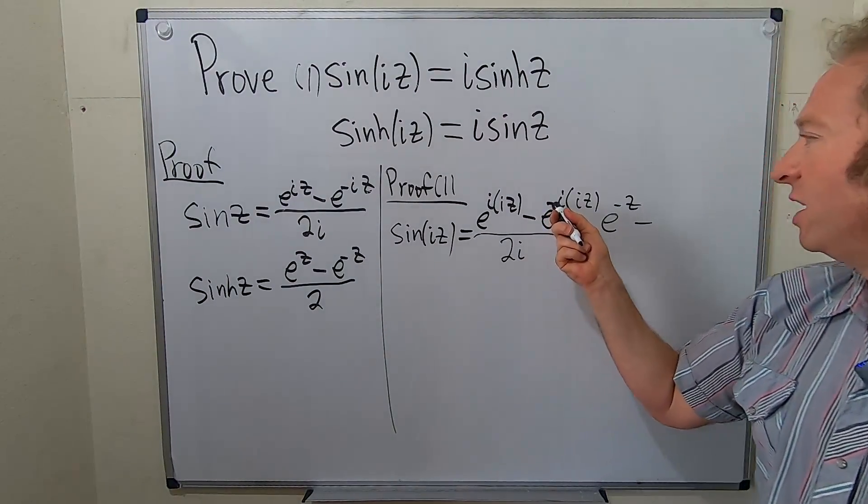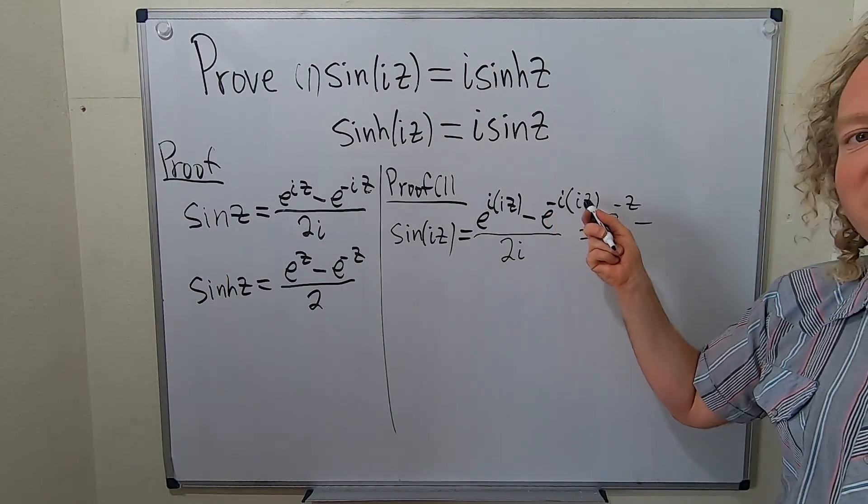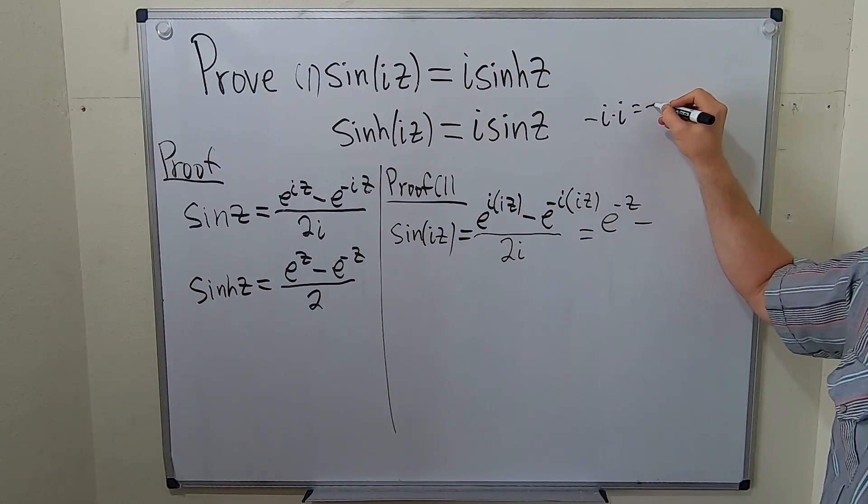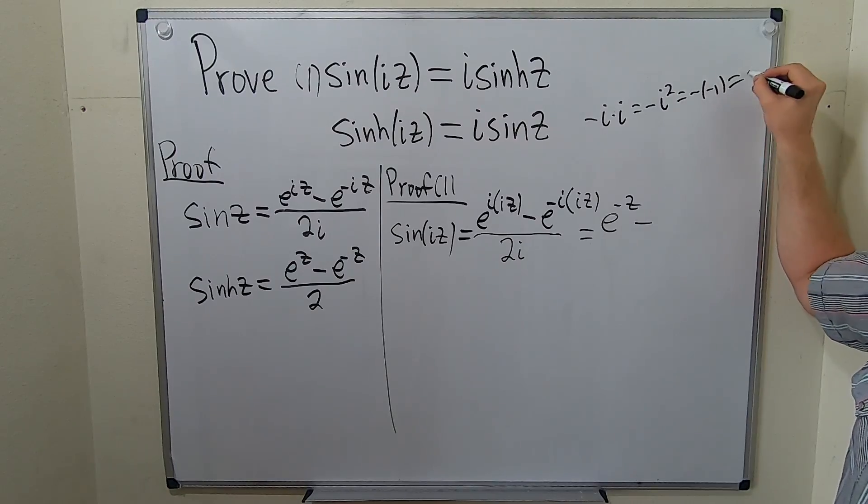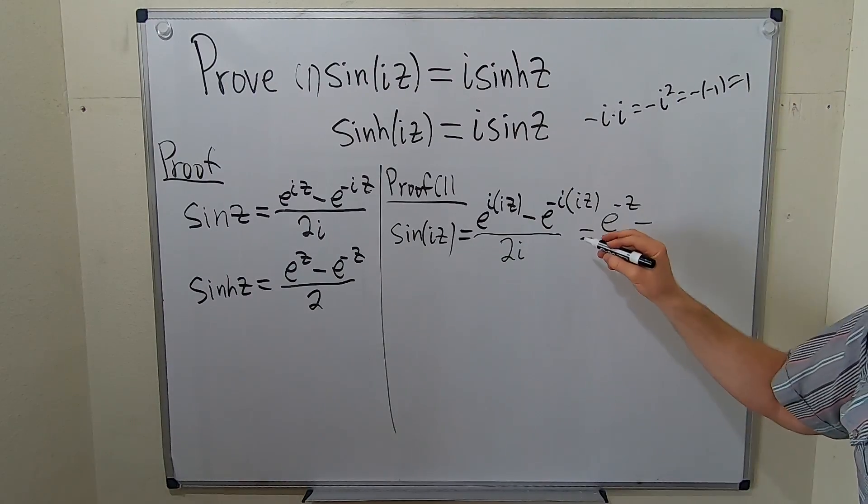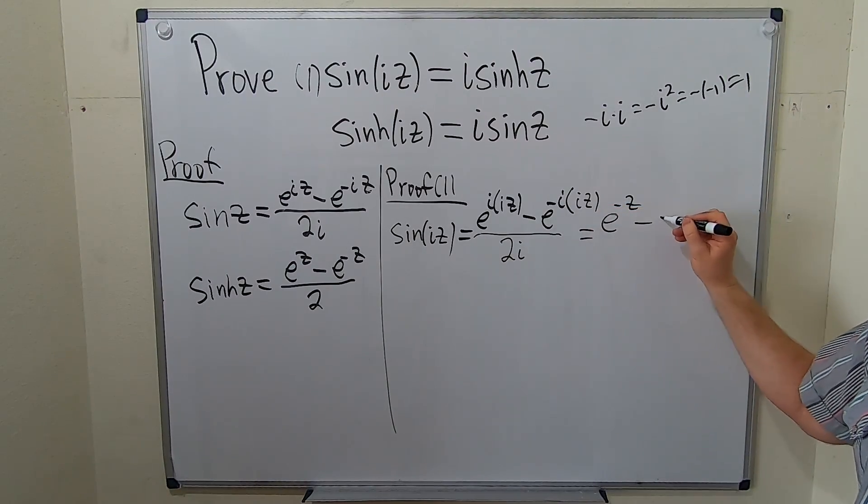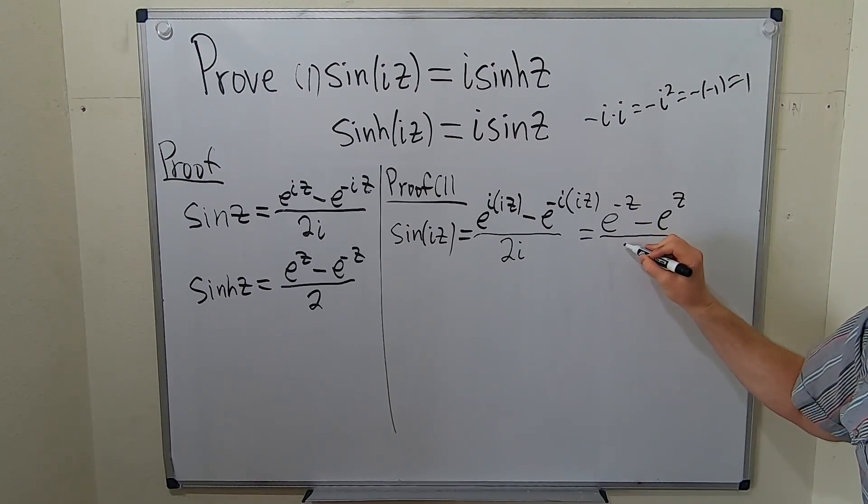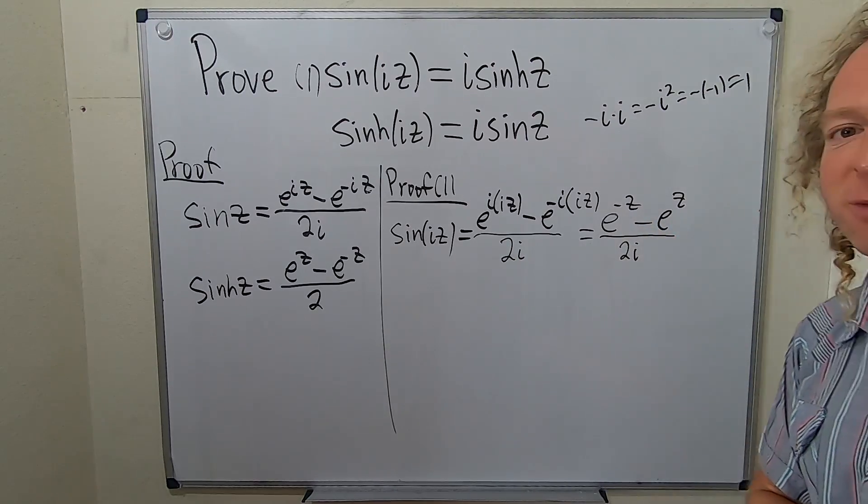And then here it's negative i times i. So that's going to be negative i squared. So that's negative negative 1. So that's 1. That's going to be e to the z all over, all over 2i.